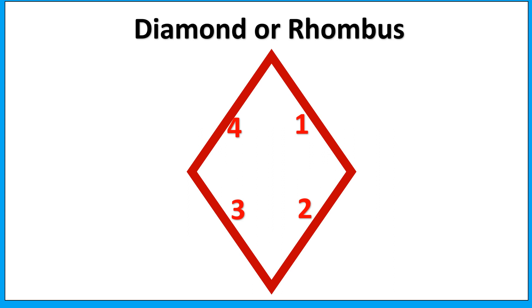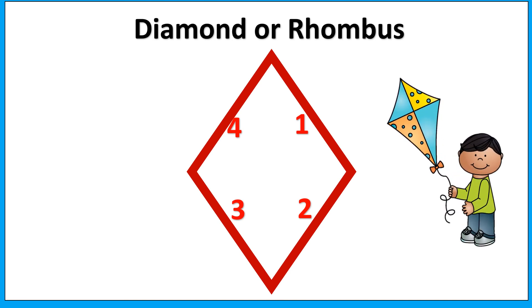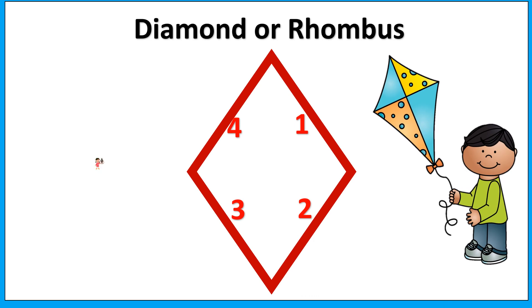A few things around us that are in diamond shape. For example, kite. Ring.